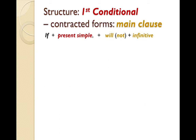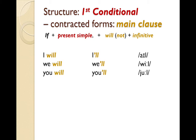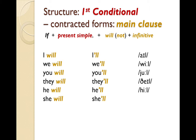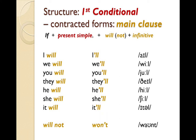Let's have a look at the contracted forms in the main clause. 'I will' can be contracted to 'I'll'. And if you're using a negative, 'will not' can be contracted to 'won't'. It's much more usual when speaking to use the contracted forms, so it would be a good idea to repeat them.